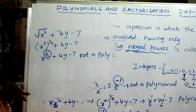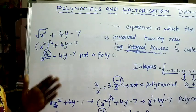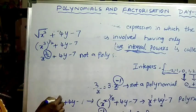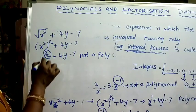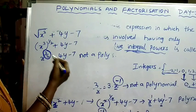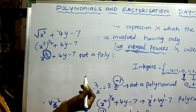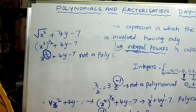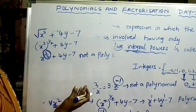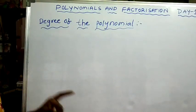Now I think you are able to identify which are polynomials and which are not. That means algebraic expressions having variables with fractional powers, negative powers, or variables in the denominator — those algebraic expressions are not polynomials.